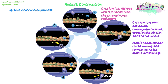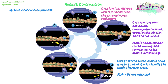Energy stored in the myosin head — in the form of ADP and Pi — is used to bend the head at its hinge, pulling the actin filament along. The ADP and Pi are then released. This movement is known as the power stroke, and it pulls the actin filament along the top of the myosin.